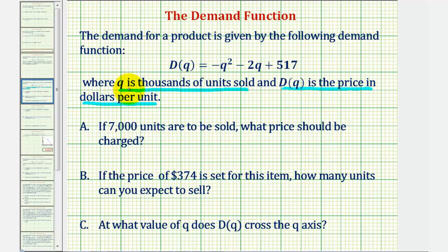It's important that we recognize here that Q is in thousands. So part A, if 7,000 units are to be sold, what price should be charged? B, if the price of $374 is set for this item, how many units can you expect to sell? And C, at what value of Q does D of Q cross the Q axis?